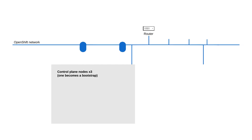We're going to start with three controllers for high availability. All-in single node is also supported, and for those seeking compactness with high availability, consider the three-node controller-worker architecture. For production, it's more common to have dedicated workers.